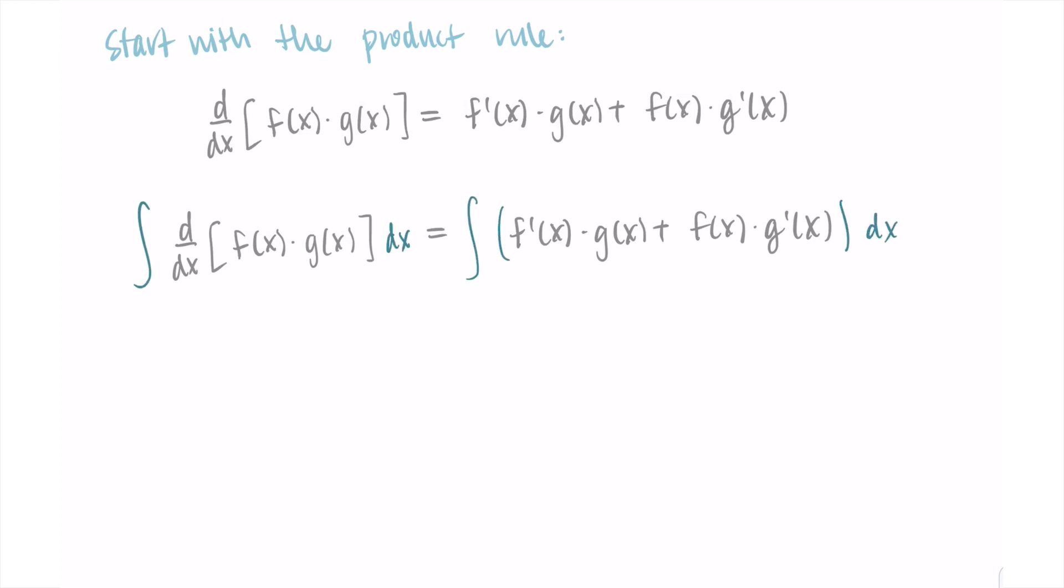Okay, so I'm taking a true statement and I'm going to integrate both sides and look at the result. So on the left hand side, when I take the anti-derivative of the derivative, they undo each other or sort of cancel each other out, and so I'm just left with f times g. Then on the right hand side, I'm taking the integral of this sort of long string of things, so I'm going to split it up into two integrals. The integral of f prime times g and the integral of f times g prime.